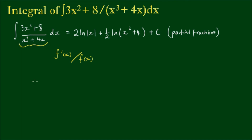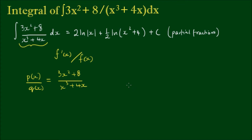So let's look at this integrand again. I can rewrite it as a quotient of two functions: p(x) on the top divided by q(x) on the bottom, where p(x) = 3x² + 8 and q(x) = x³ + 4x. What we see is that if we take the derivative of q(x), which equals 3x² + 4, and compare it to p(x), we've almost got the derivative of the denominator — the 3x² term is common.